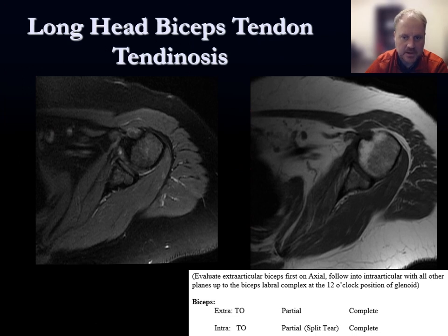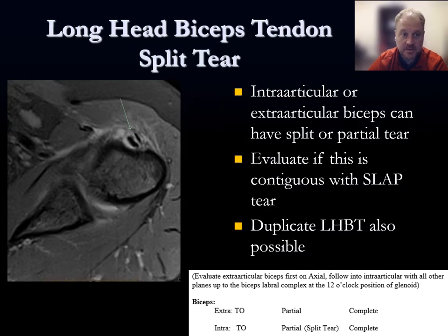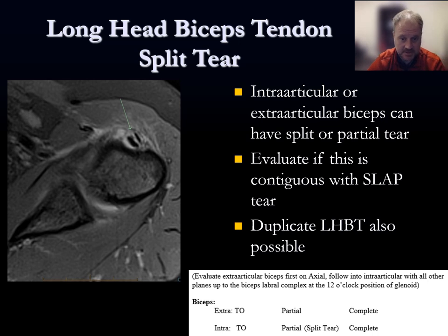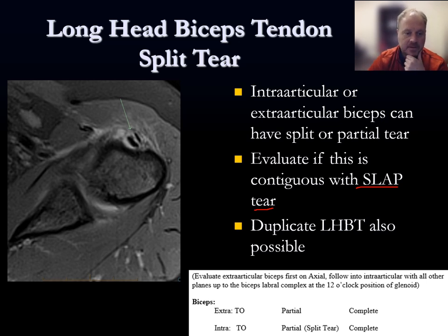Long head biceps tendinosis follows the same rules as other tendons: thickened tendon with T2/PD fat sat hyperintensity that is intermediate to increased in signal but not fluid-bright and not absent. Other pathology includes partial tears, split tears, and tears at the biceps labral complex that can be part of SLAP tears. An uncommon but described finding is a duplicate long head biceps tendon.